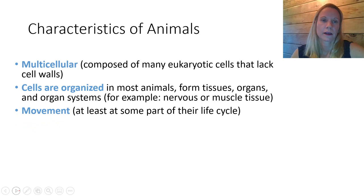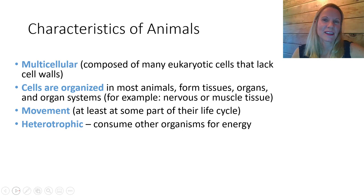Most animals have movement. They have muscle tissue and nervous tissue that coordinate to allow for movement. Although in some of the very primitive animals, the movement was limited to just their reproductive cells. All animals are heterotrophs, meaning that they have to consume other cells or organic material in order to make their ATP energy.